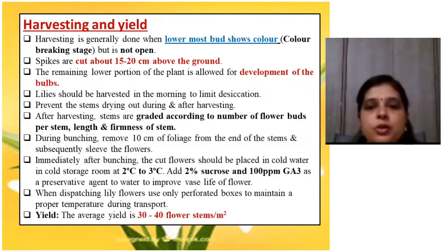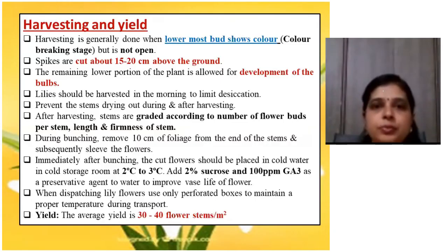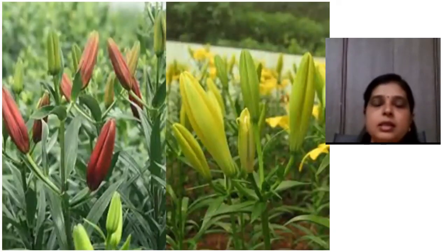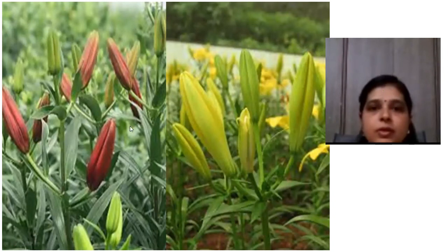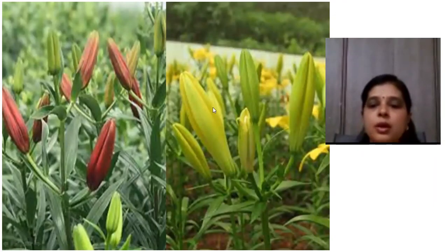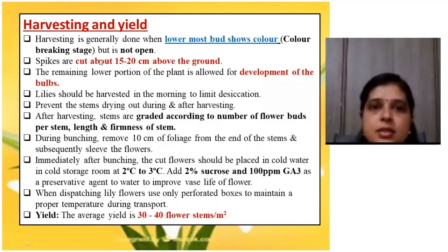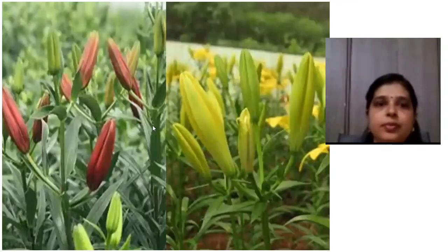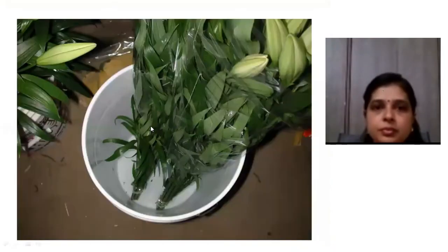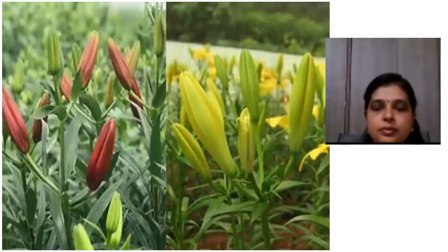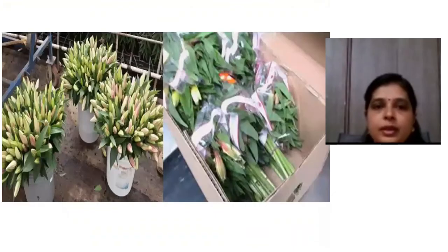Yield goes up to 30 to 40 flower stems per square meter. The ideal harvesting stage is when color has developed but the bud has not opened. This figure shows the packaging and grading of lilium.